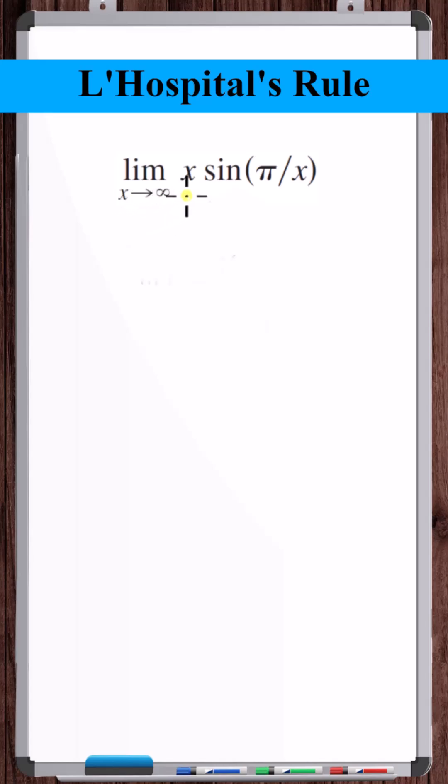What is the limit as x approaches infinity of x times sine of pi over x? Plugging in infinity, x goes to infinity, pi over x goes to 0, sine of 0 is 0, so this term goes to 0.